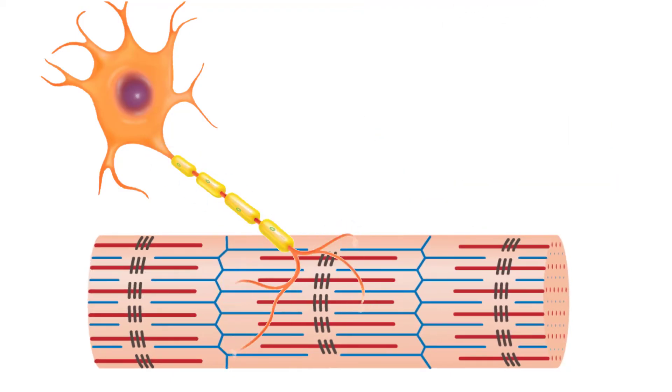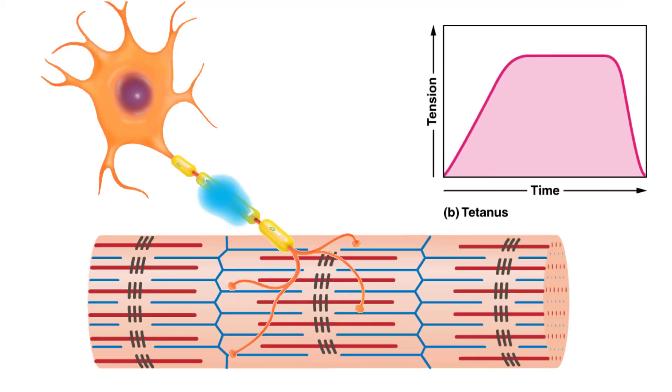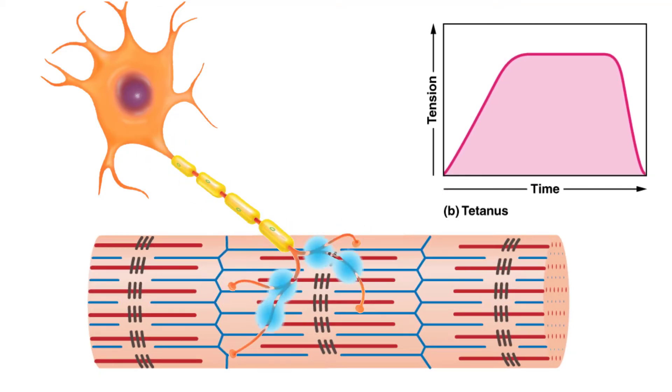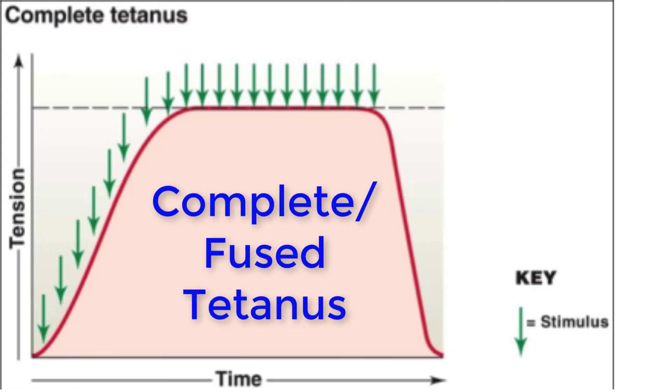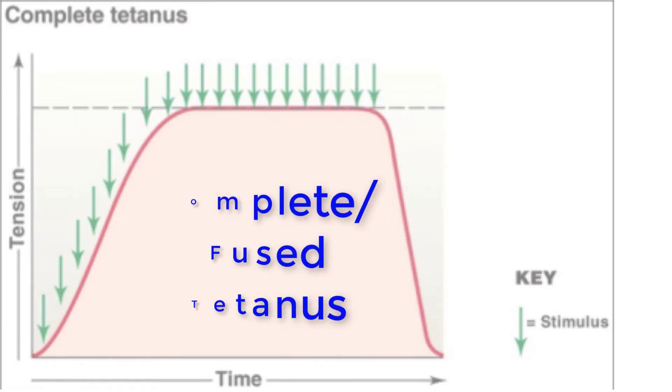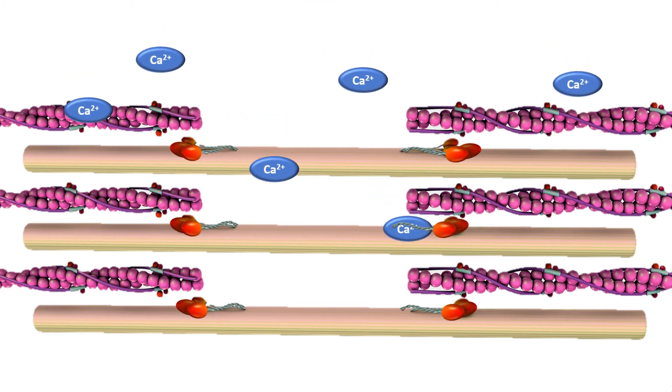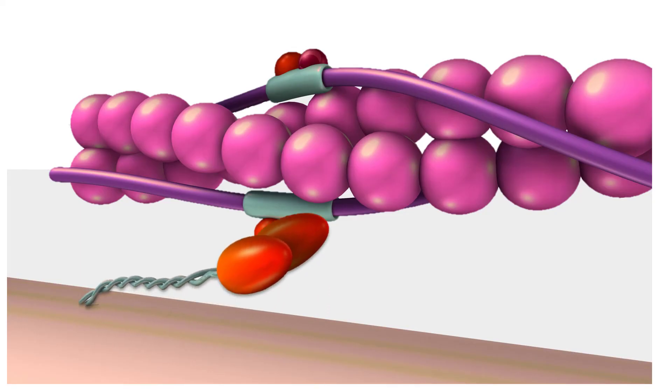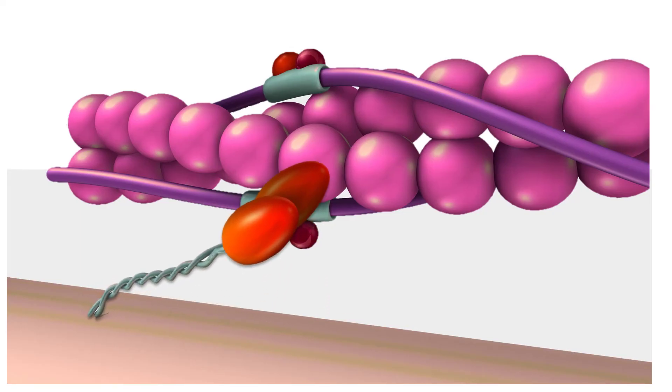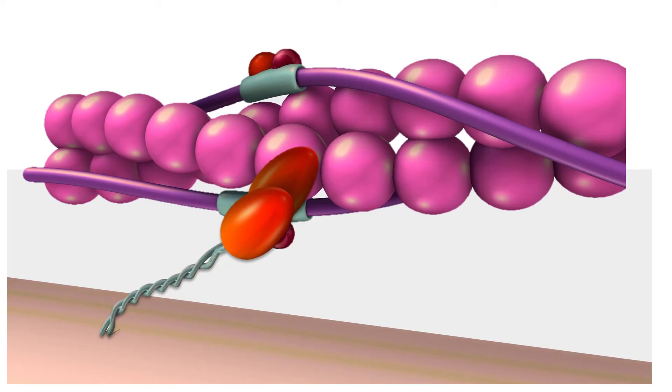If the stimulus frequency is so high that the relaxation phase disappears completely, the contractions become continuous in a process called complete tetanus. During complete tetanus, the concentration of calcium ions in the sarcoplasm allows virtually all of the sarcomeres to form cross bridges and to shorten. This allows the contraction to continue uninterrupted.